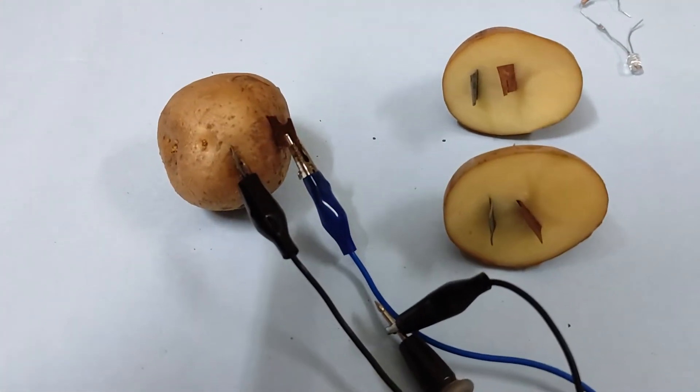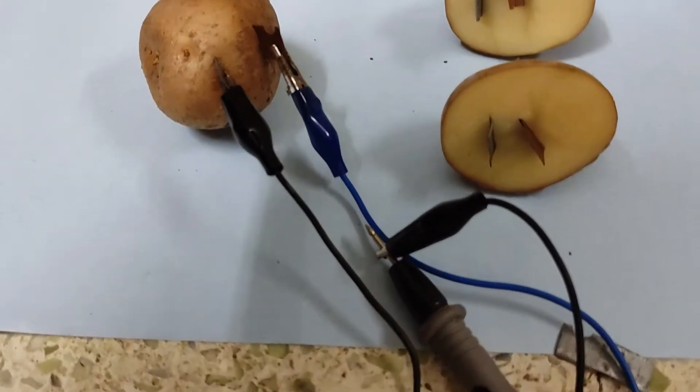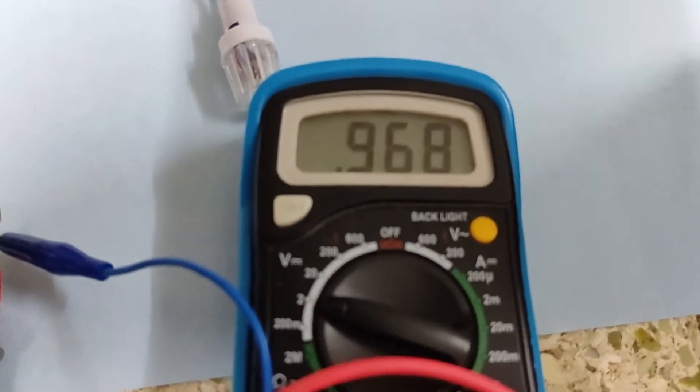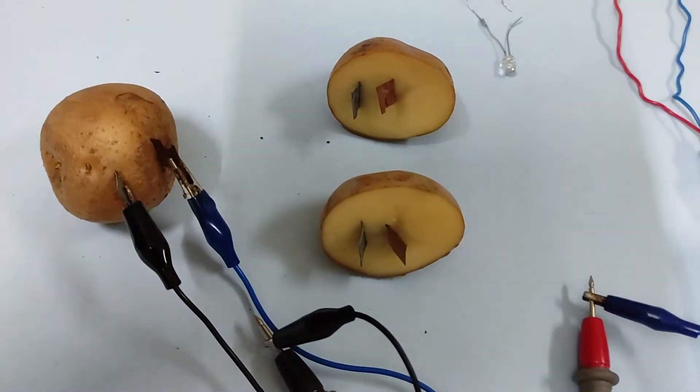Here, we connected one potato. We connected through wire to the multimeter. It is generating 0.96 voltage. This potato has generated 0.96 voltage.